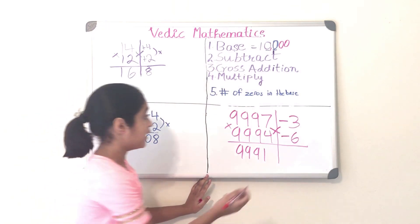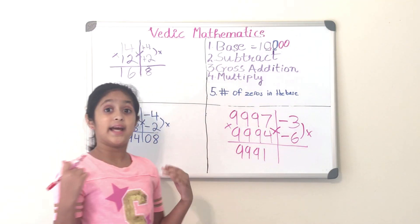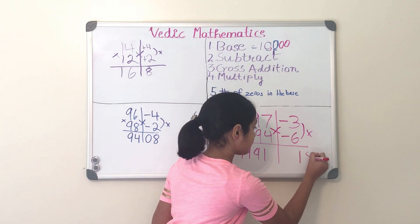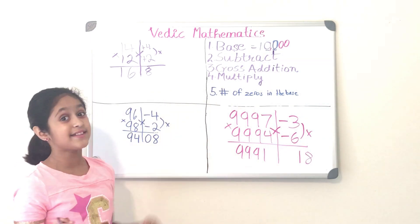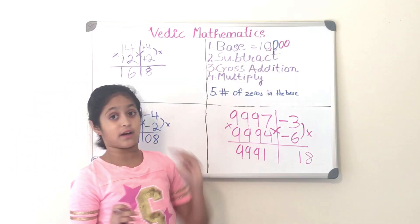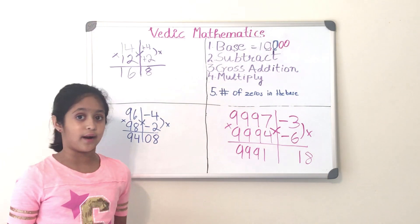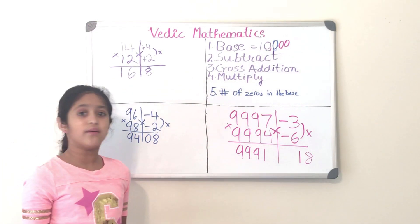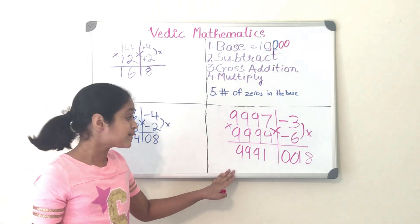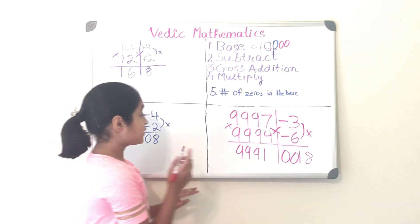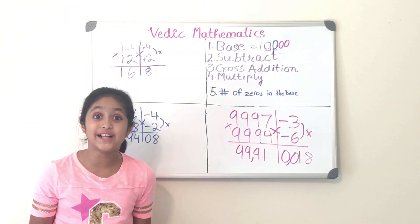Step four: multiply. We multiply minus 3 times minus 6, which equals plus 18. Now for step five — pay attention to how many zeros are in the base. In 10,000 there are four zeros, so we need four digits. We already have two digits in 18, so we add two zeros before it, making it 0018. The final answer is 99,910,018.